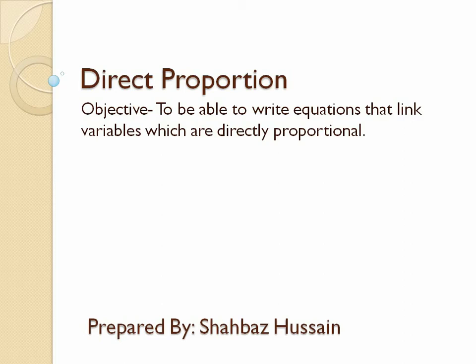There are two types of proportion. The first one is direct proportion. Direct proportion means if you buy something like a pencil which costs 5 rupees, and you buy two pencils, the cost is 10 rupees. This is the direct relation between the cost of the pencil and the number of pencils.